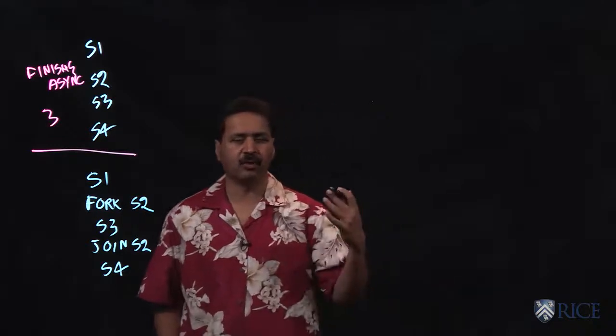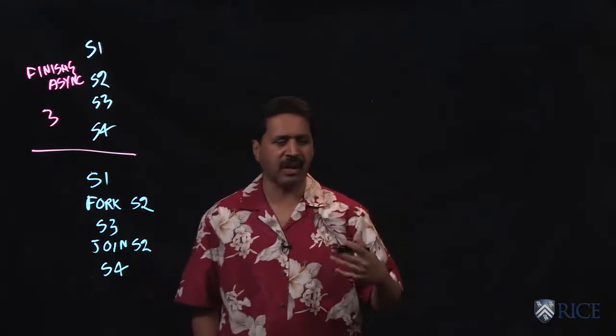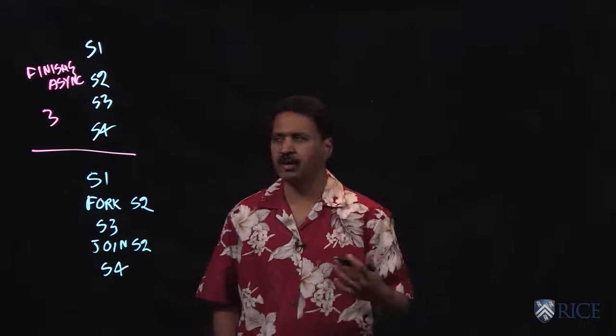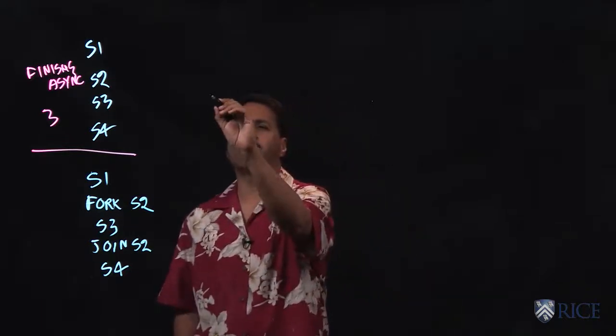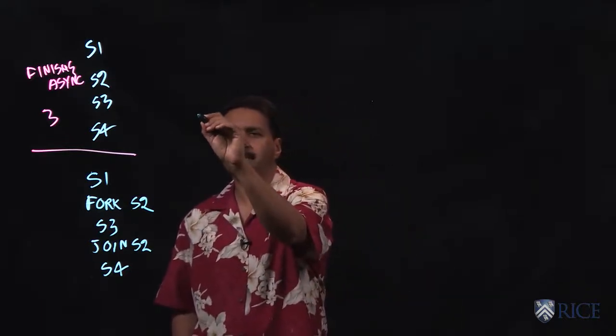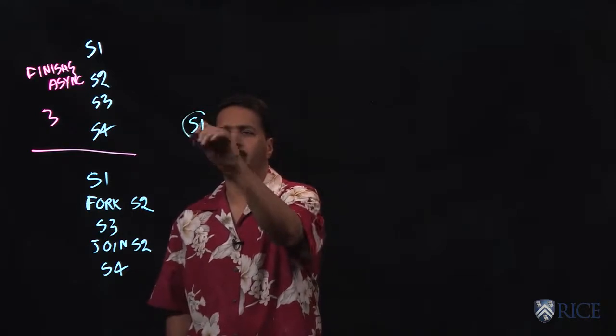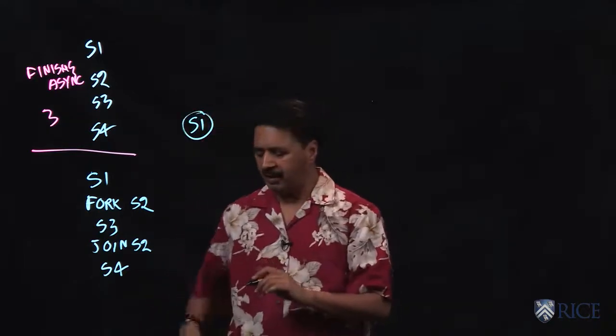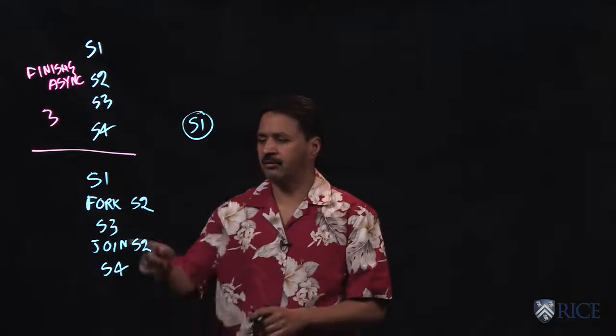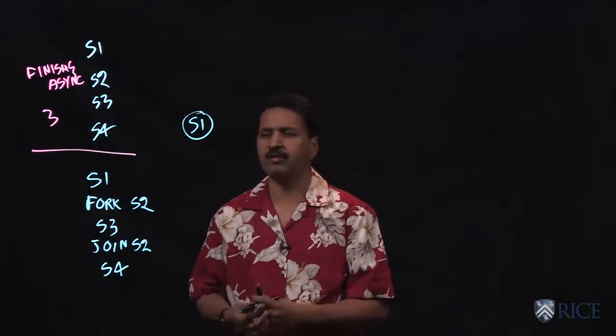This graph is purely a mental abstraction. It does not actually get constructed or built when your program is running, but logically we can think of statement s1 executing, and then after that, if you look at the fork-join version, it does a fork.